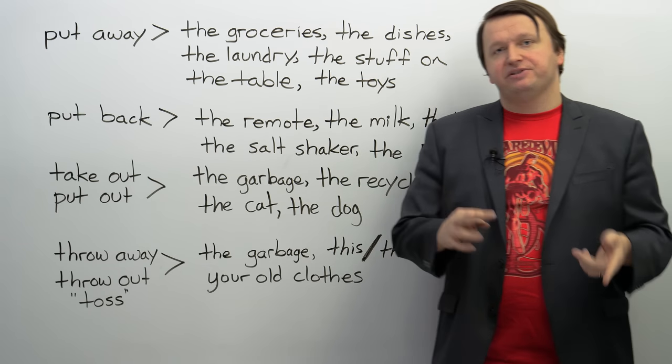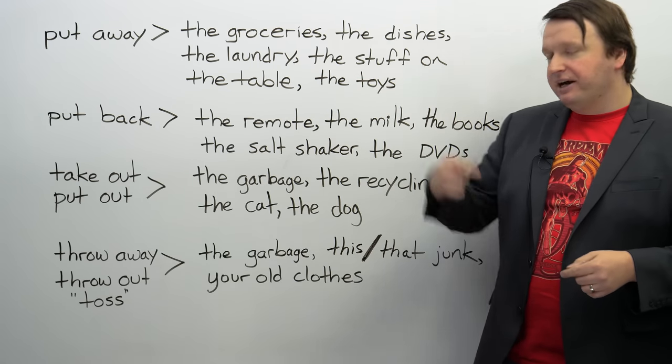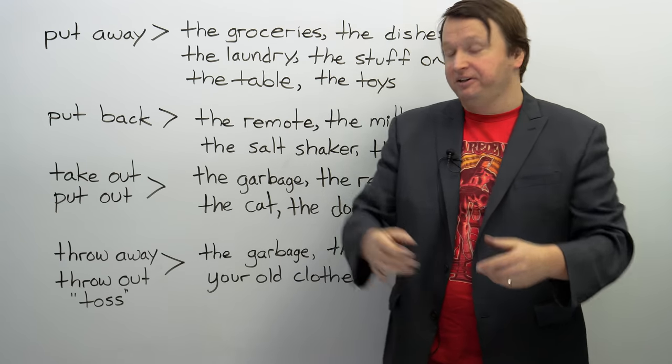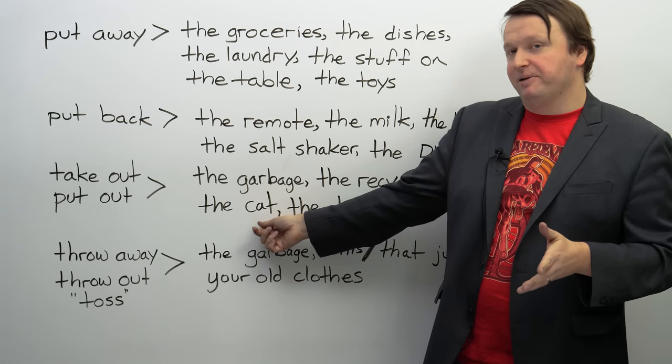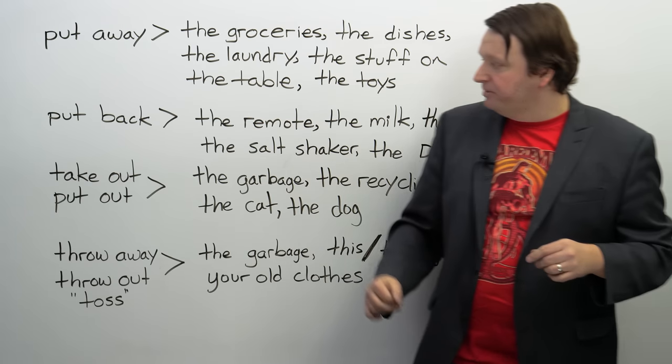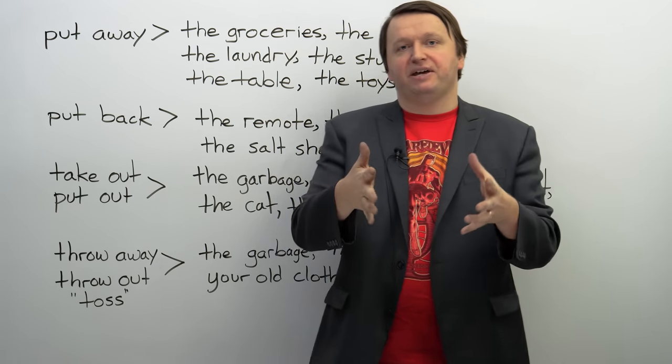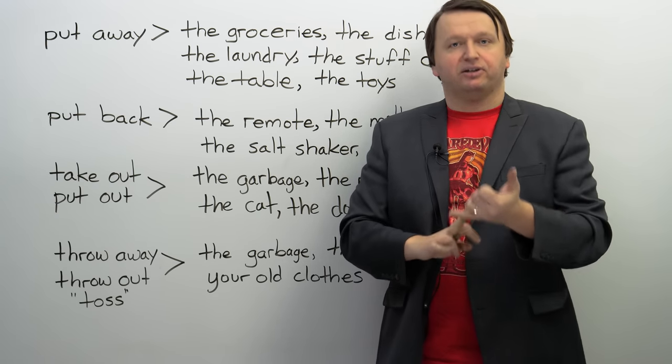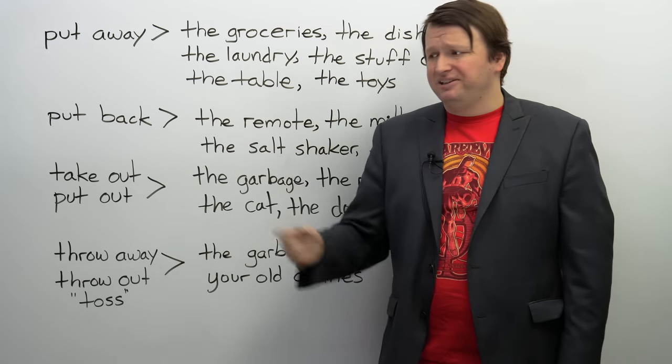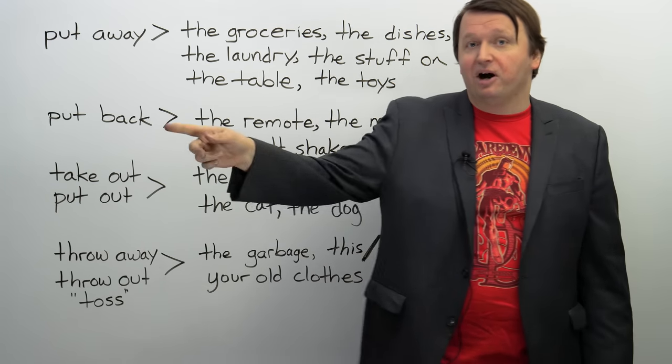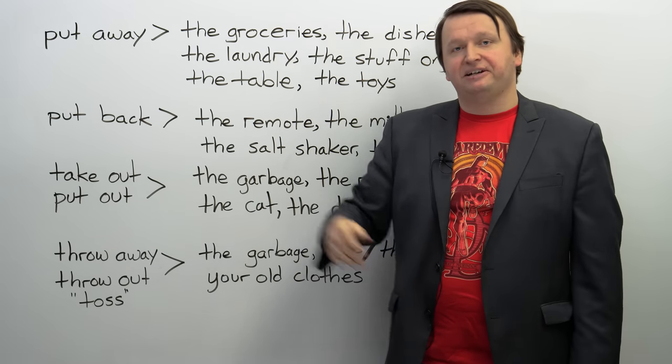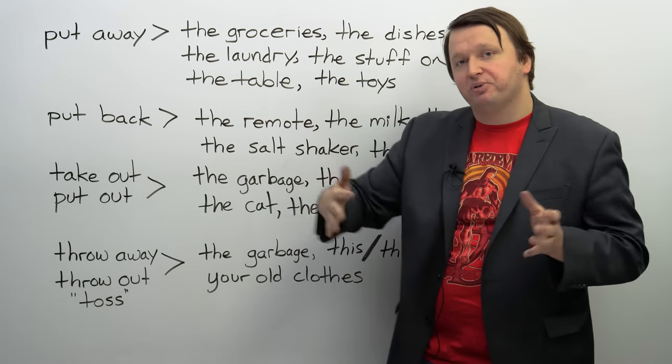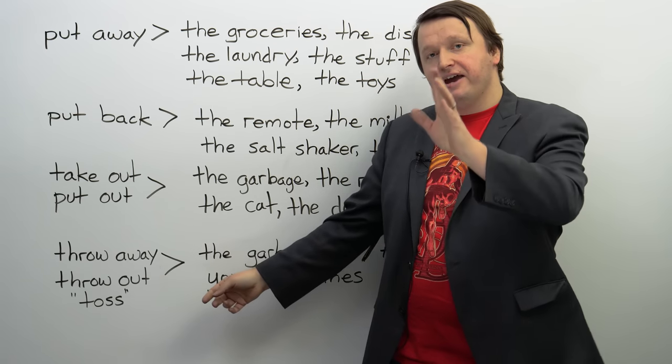Alright, next we have take out and put out. So, you can use both of these in the same way. Here we have take out the garbage, put out the garbage, the recycling, the compost, the cat, the dog. So, to take out or put out something or someone, depends how you feel about animals. If you think they're people, I guess. So, you can take out the cat, take out the dog, put out the cat, put out the dog. This means to take something inside the house and put it outside the house. So, usually you do this with garbage, recycling, compost. If you have pets and the dog needs to pee, hey, can you put the dog out? Or can you take the dog out for a walk? Another one for dogs and cats, if they need to pee outside. You can say, can you let the dog out? Or can you let the cat out? Alright, so you can take out garbage, take out animals, put out garbage, put out animals.